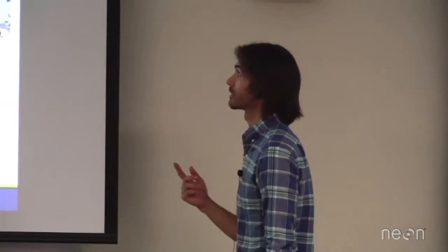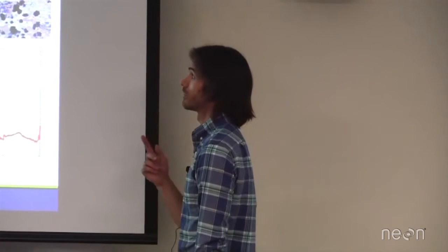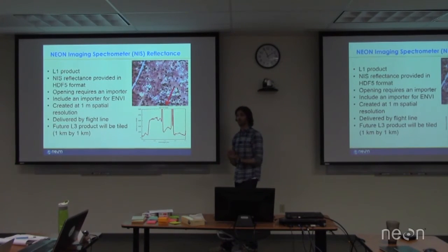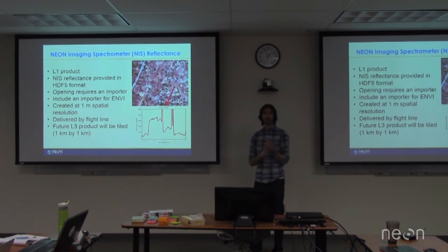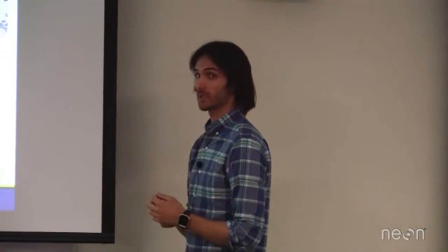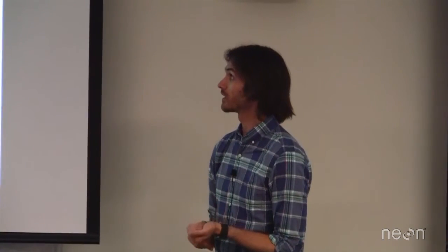So we have several products that we produce from the imaging spectrometer. The first is just pure reflectance. We do collect the data. We go through a process called DN to radiance, which changes the raw digital counts that's collected by the instrument into at-sensor radiance. And then we orthorectify that radiance, which Nathan talked about this morning. And then we do an atmospheric correction, which gets us to reflectance. And so, currently, we provide all the reflectance data by flight line in HDF5 format.